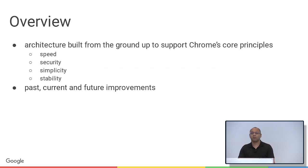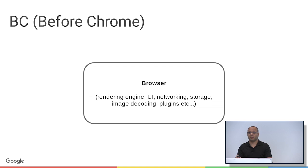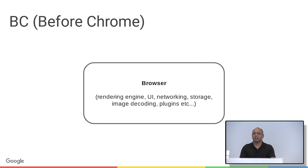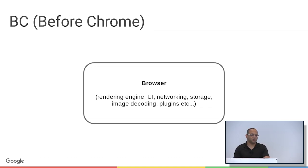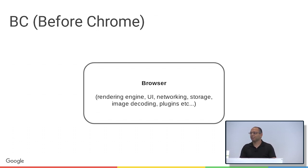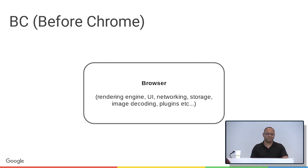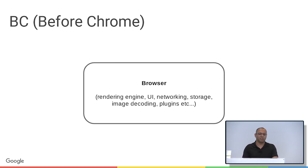So what did things look like before Chrome? Everything ran in the same process — the networking, the UI, the rendering engine, the plugins, image decoding, and so on. And actually most of these things ran on the same thread. This was obviously not ideal, because if one tab stopped working or crashed, it would take down all the other tabs and the browser itself. That's like when you'd be writing a big email, the browser would crash, and you'd have to start all over again. A lot of apps were written that way at the time, before most users had multi-core CPUs.